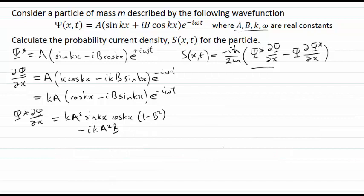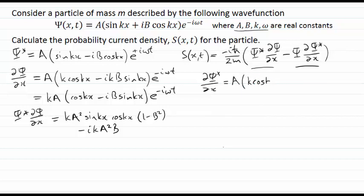The next thing to calculate is the second term, ψ times dψ*/dx. Let's calculate dψ*/dx. Quite straightforwardly, in a similar way to before, we get a k cosine kx, and then the cosine becomes minus sine, so we end up with plus ikb sine kx, still with e^{+iωt}. Now we want to multiply ψ, our original function, with dψ*/dx.